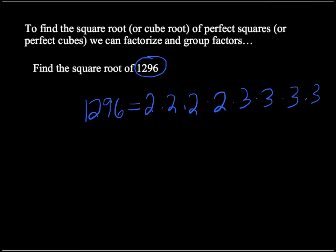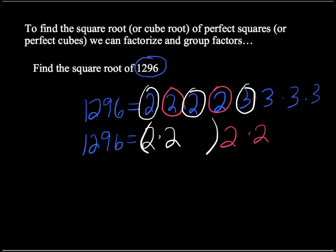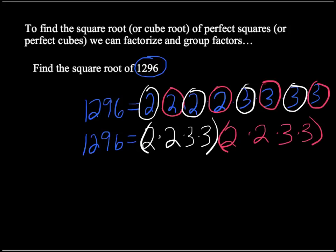We're now going to group these numbers together into two separate piles. I'm going to take one 2 over here, and a 2 over here. This second 2 can go into this pile, and this into that pile. And if I continue that way, taking a matching set in white and a matching set in red, what I've done is create two separate numbers which are, in fact, the same.